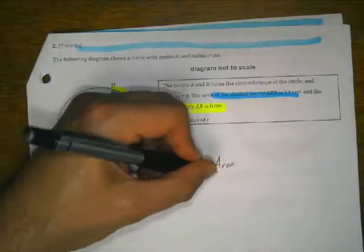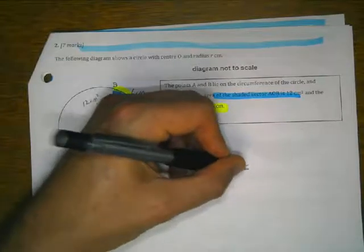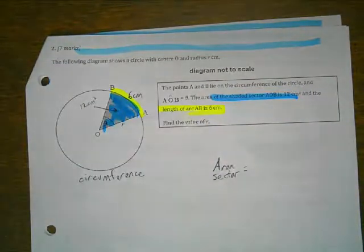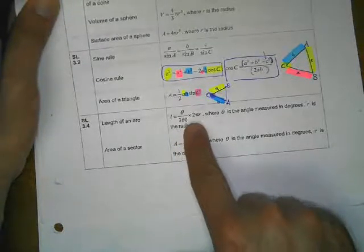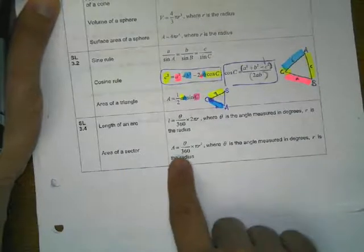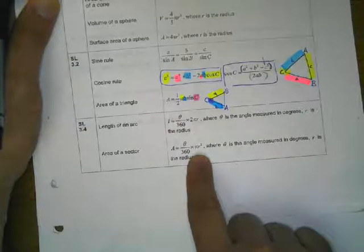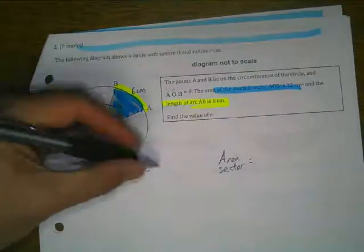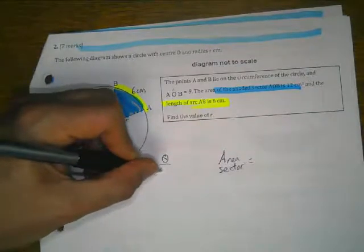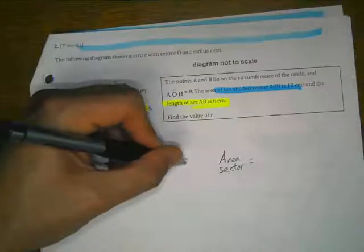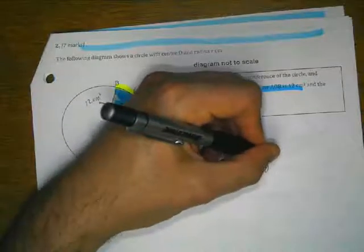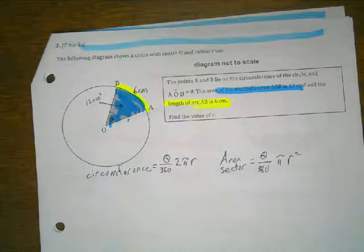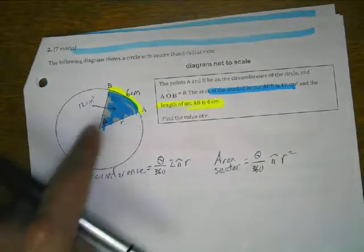From the formula packet, the length of an arc is the angle divided by 360 times 2πr, and the area of the sector is the angle divided by 360 times πr². So let's write those formulas down: arc length = (angle/360) × 2πr, and area = (angle/360) × πr². We know the arc length is 6.